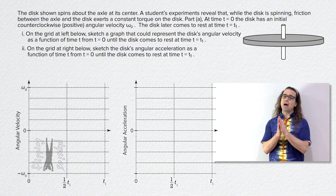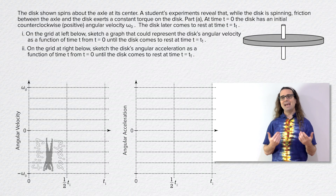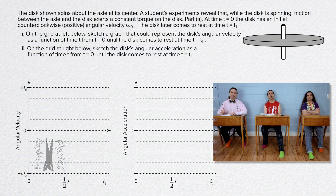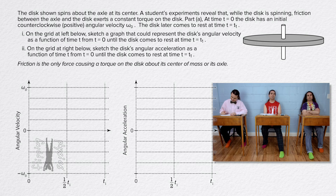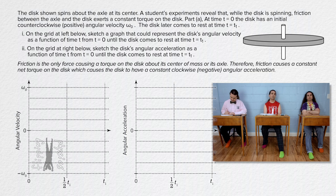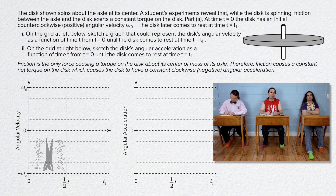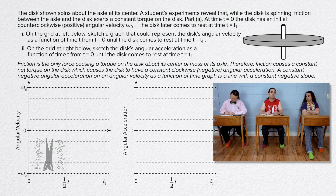Thank you Billy. Bobby, please solve all of part A. Friction is the only force causing a torque on the disk about its center of mass or its axle. Therefore, friction causes a constant net torque on the disk, which causes the disk to have a constant clockwise or negative angular acceleration. A constant negative angular acceleration on an angular velocity as a function of time graph is a line with a constant negative slope.